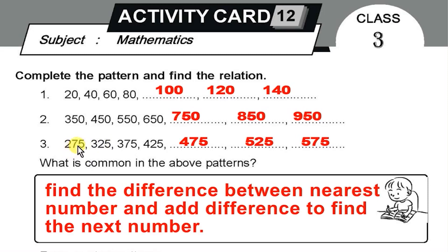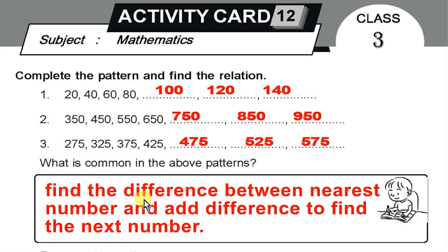The difference is 50. So 475 plus 50 is 525, and 525 plus 50 is 575. What is common in the above patterns? The common rule is: find the difference between the nearest numbers and add that difference to find the next number.